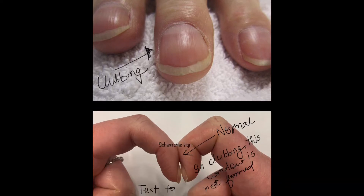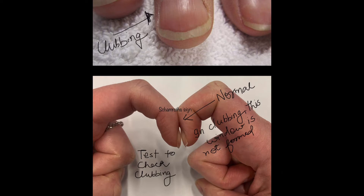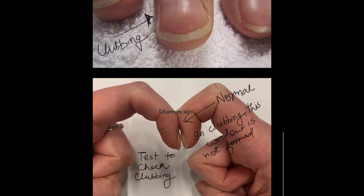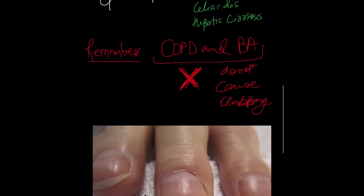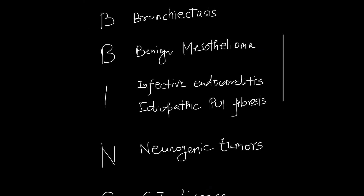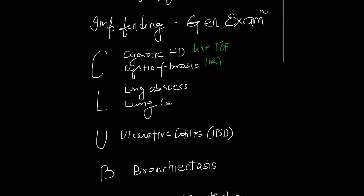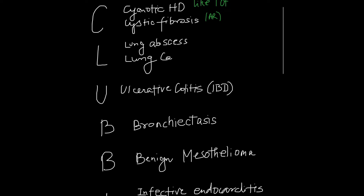The test we do to find if clubbing is present or not is Schamroth's window sign test. In normal persons, you can see a window while doing this test, as shown in the picture. But in clubbing, this window is absent. So coming to the causes of clubbing —